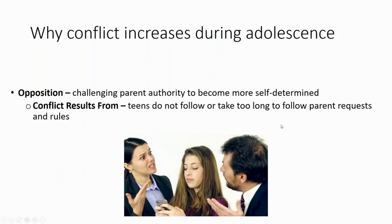The third normative process that occurs during the teenage years is referred to as opposition — simply the process of teens challenging parental authority in an effort to become more self-determined. This is a double-edged sword. We know that teens need to go out on their own, often starting jobs for the first time or living on their own if they go to college. And so in order to become more autonomous, there's a normative process where teens are going to be pushing the boundaries and challenging the limits of their parents' authority.